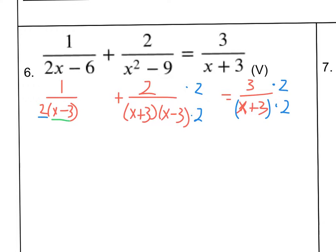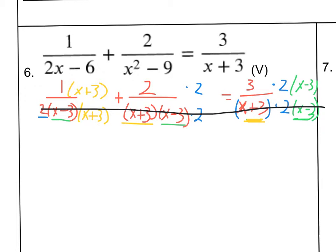Let's look at our first fraction — we've got X minus 3. We've got that in our second one, so we're good. We do not have that in our third one, so we have to include it there as well: X minus 3. Then looking at X plus 3 — the first fraction doesn't have that, so I'm going to multiply that up. The second fraction does have it. So now we've got X plus 3 in all 3, 2 in all 3, and X minus 3 in all 3, which means we can eliminate all of our denominators at the same time.